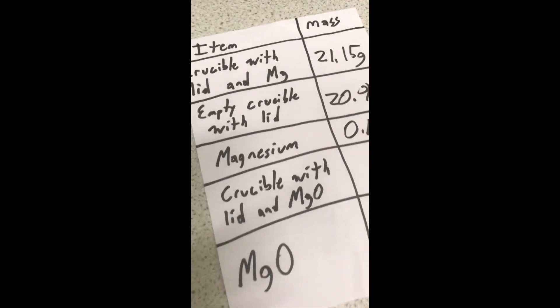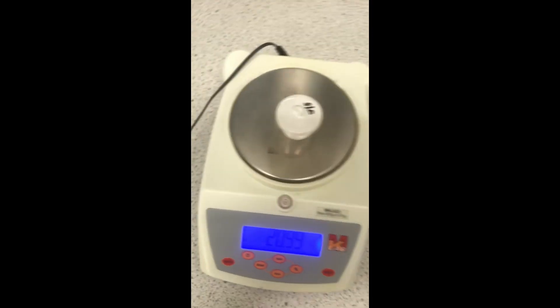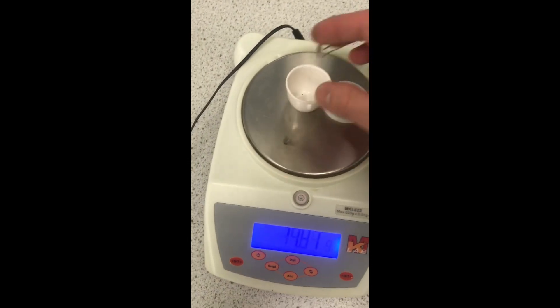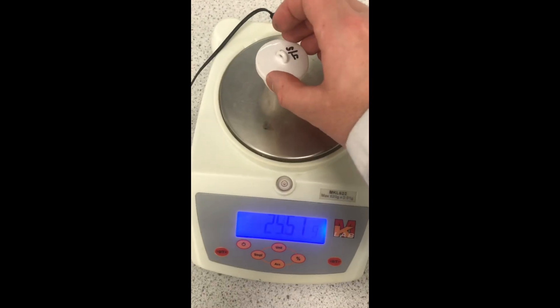Now, what I'm going to do, I'll place the magnesium back into the crucible, put the lid on, and using tongs, I will place this over my setup.